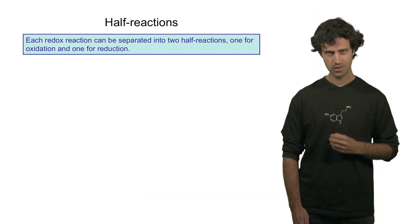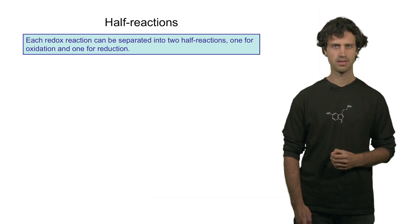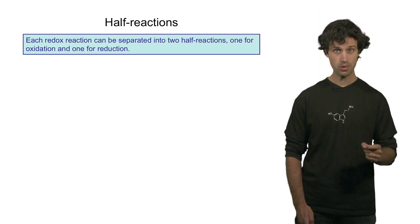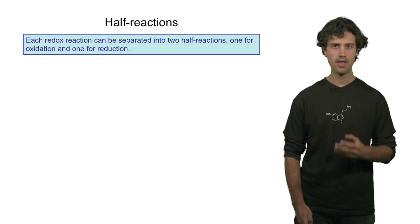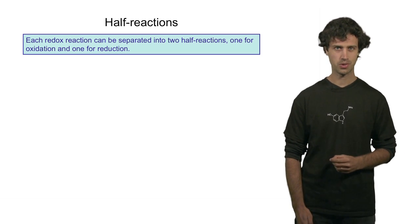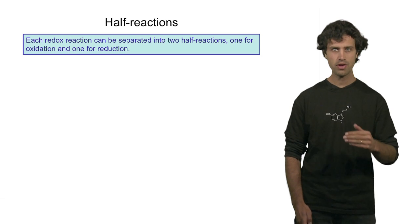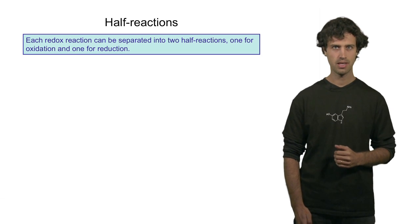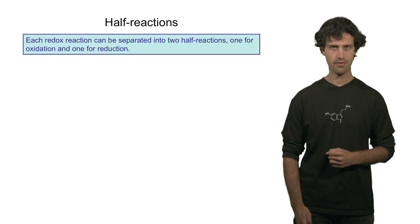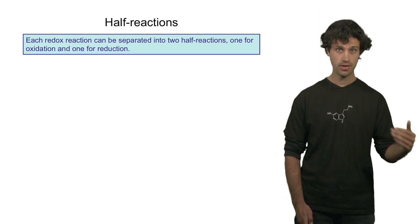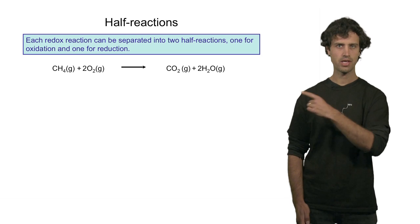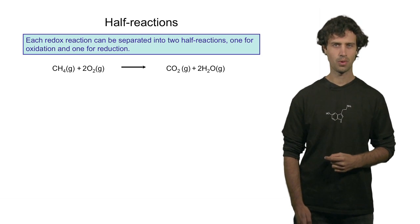Redox reactions consist of two parts. There is an oxidation step, in which a reducing agent becomes oxidized, and there is a reduction step, in which an oxidizing agent becomes reduced. So we can write every redox reaction in terms of two parts: an oxidation half reaction and a reduction half reaction.